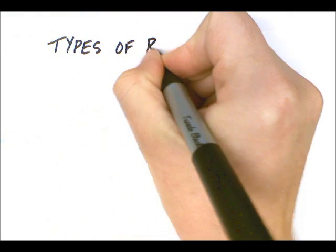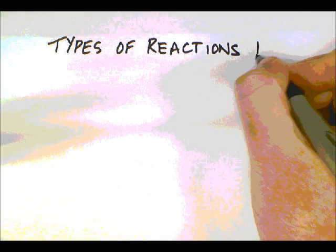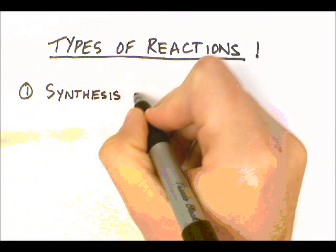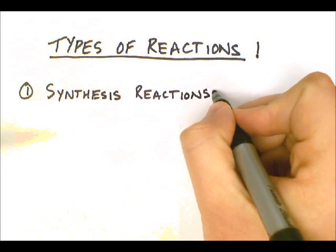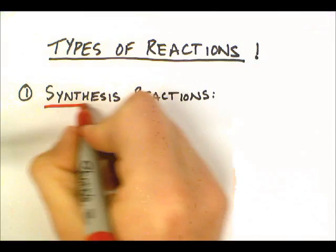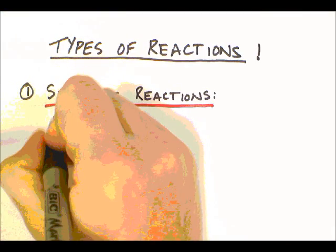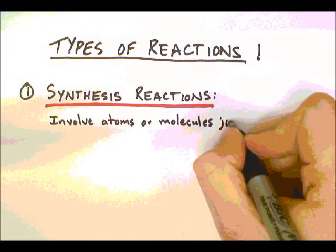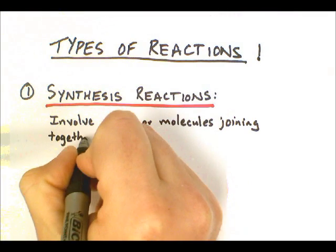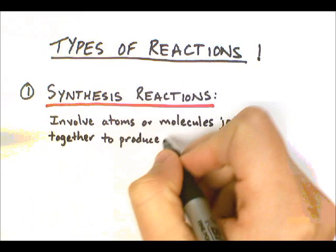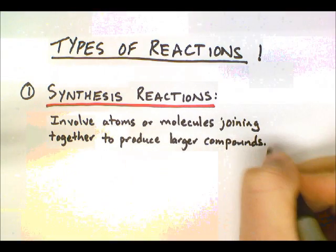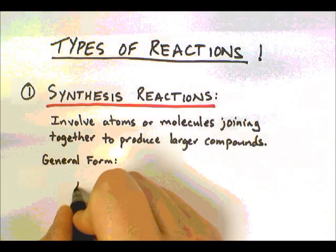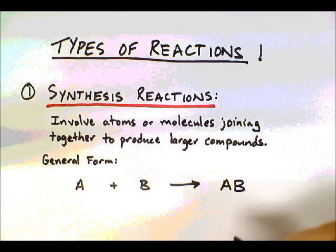We're looking at types of chemical reactions. There are five different types of reactions we're going to look at today. We're going to start with the first one, the simplest one, which is a synthesis reaction. Synthesis reactions mean you're combining two substances together to create a new substance — essentially taking something small and making it larger by adding pieces. We involve atoms or molecules and join them together to produce large compounds. The general form for this reaction is A plus B produces AB.